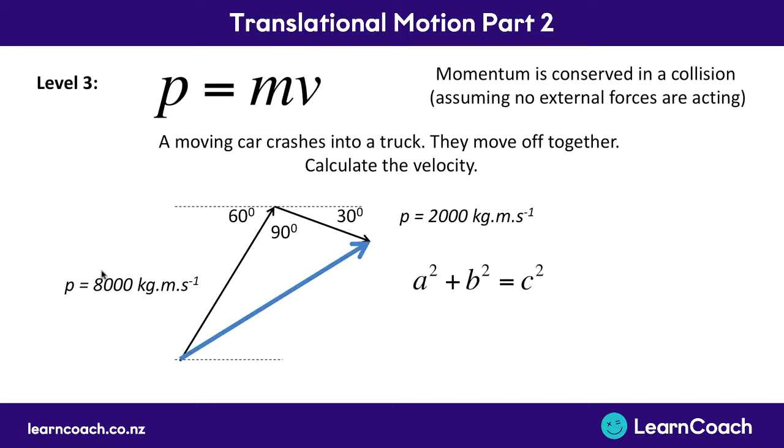So to calculate this though, we can no longer just add together the 8,000 plus the 2,000 because they're on different angles, we have to use Pythagoras. Now you'll notice as tends to happen in your exams that they'll almost always be at 90 degrees. So you can use Pythagoras and you can use SOHCAHTOA or trigonometry.